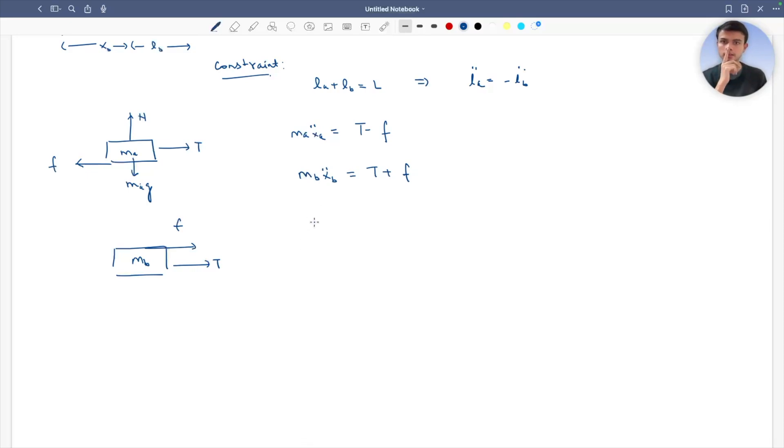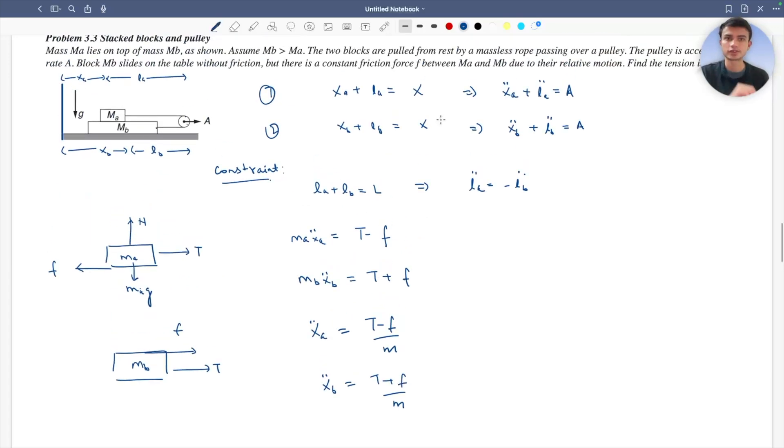Now xa double dot is tension minus f over ma, and xb double dot is tension plus f over mb. From these equations I'll replace and get A minus la double dot equals tension minus f over ma.